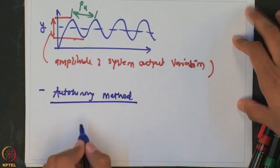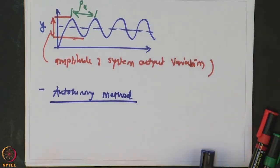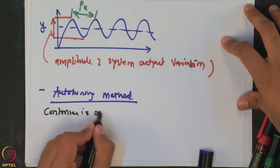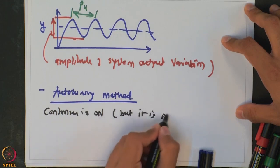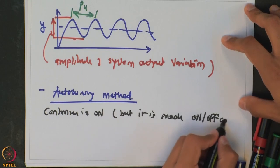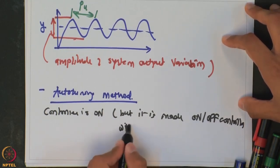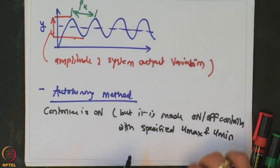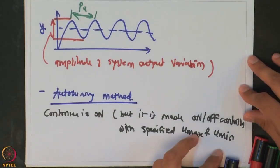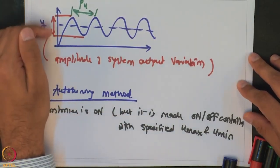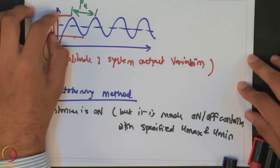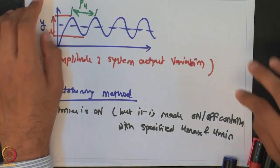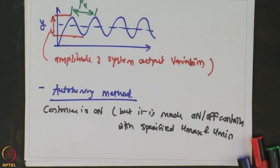To alleviate the large oscillation problem, there is another method of closed loop tuning known as auto-tuning, which is very popular. In the auto-tuning method, the controller is on but it is made an on-off controller with specified u_max and u_min. You can set how much the manipulated input changes around the steady state value. If the amplitude of output variation is too large, you clamp u_max and u_min to be very close to each other to limit the variation.